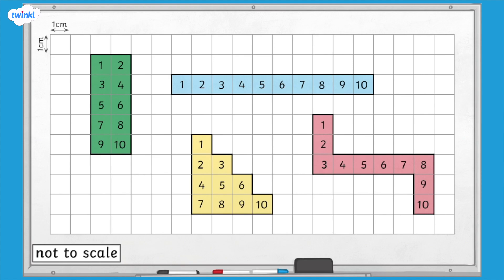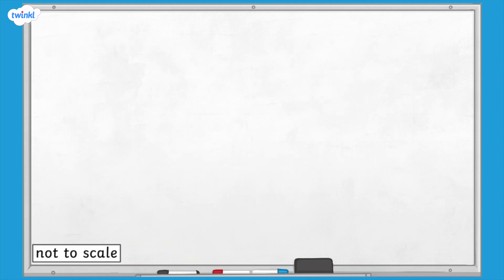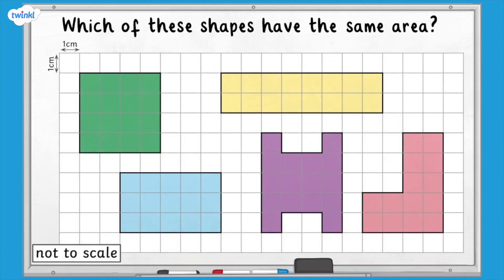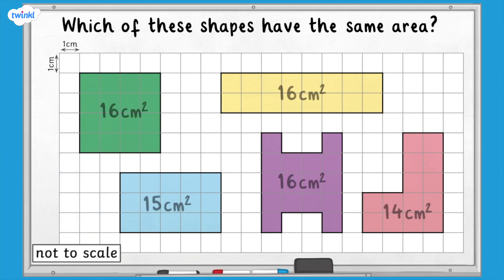This shows us that shapes with the same area do not have to look the same. The green, yellow, and purple shapes all have the same area of 16 centimetres squared.